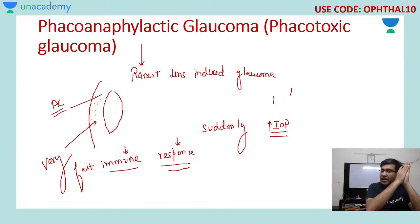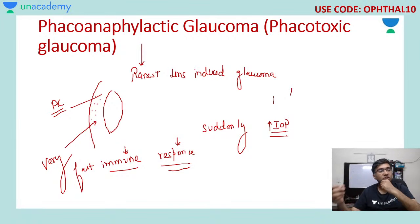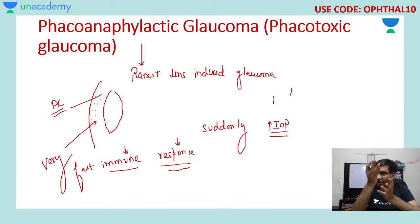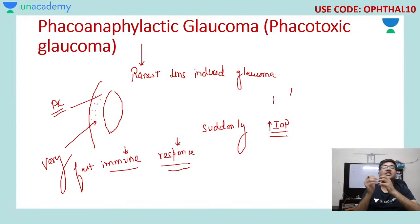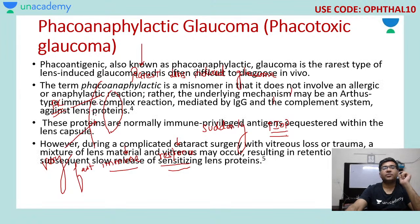To summarize the open angle types: phacolytic glaucoma is caused by macrophages and lens antigens entering the anterior chamber through an intact capsule; lens particle glaucoma is caused by lens material entering after a break in the anterior capsule; and phacoanaphylactic glaucoma is an Arthus-type immune response to sensitized lens particles in the anterior chamber.